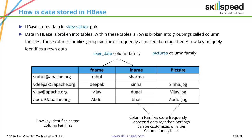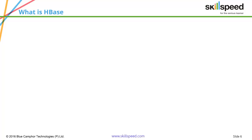When you want to access the data, you mention the row key. For example, if you want the data for 'vijay@apache.org', you can simply request all data related to Vijay, or specify column family 'user data' to get only first name and last name, or further specify 'user data: first name' to get only the first name. So the structure is: a row key that uniquely identifies the data, column families as collections of columns, and individual columns holding the entries.